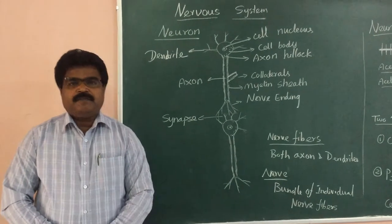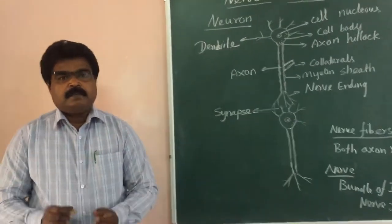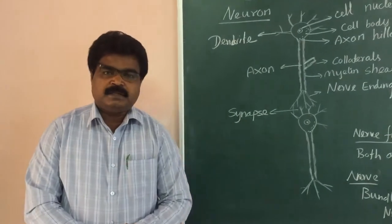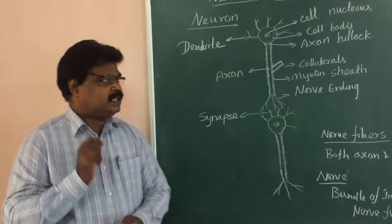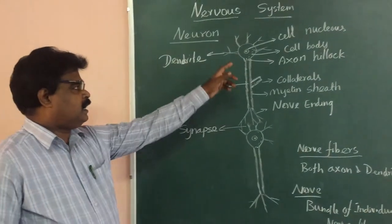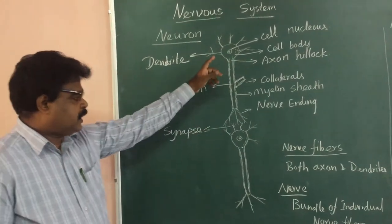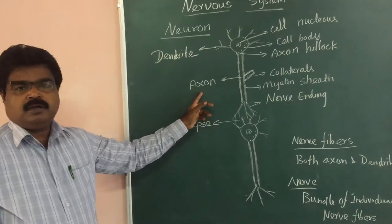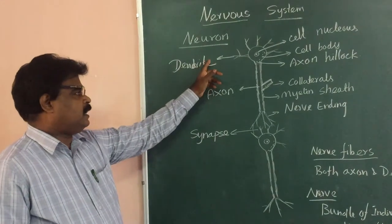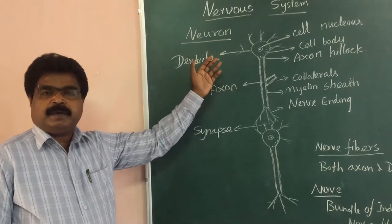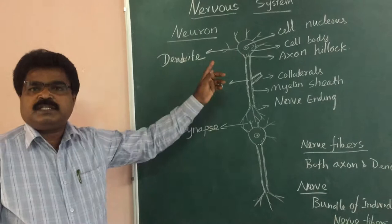Dear students, today we are going to discuss about the Nervous System. The basic unit of the nervous system is the Neuron. A neuron is a single cell with a cell body, a centrally located nucleus, a long transmitting fiber called the axon, and dendrites. The dendrites are the fibers where information is given into the neuron.